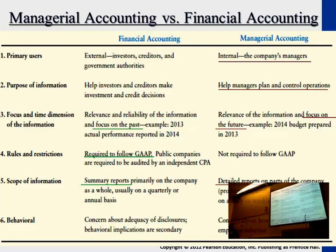The second category is the purpose of the information. For financial accounting, it helps with investing and crediting decisions for investors and creditors. For managerial accounting, it helps management plan, control, and do budgeting.